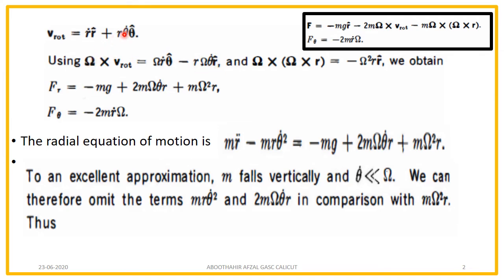Omega cross theta-cap will be minus r-cap. So multiplying with r times theta-dot and omega, I get minus r times omega times theta-dot times r-cap. Now consider omega cross (omega cross r). Since omega cross r is omega times r times theta-cap, and omega cross theta-cap is minus r-cap, multiplying omega with omega cross r gives omega-squared times r. So I got minus omega-squared times r times r-cap.